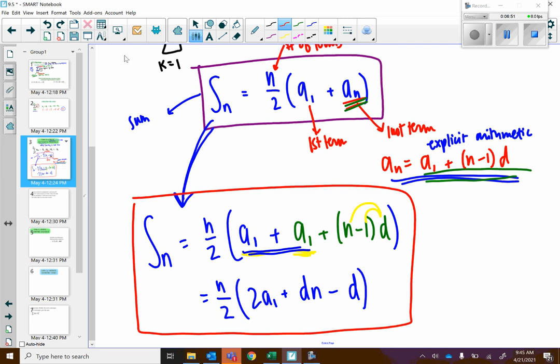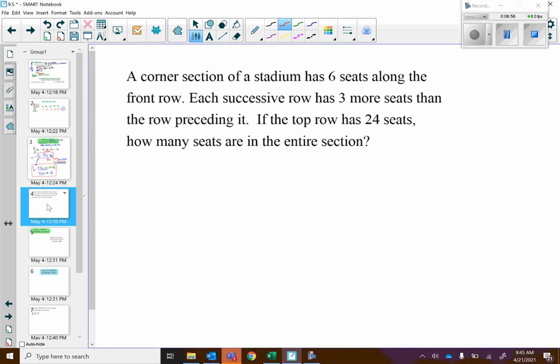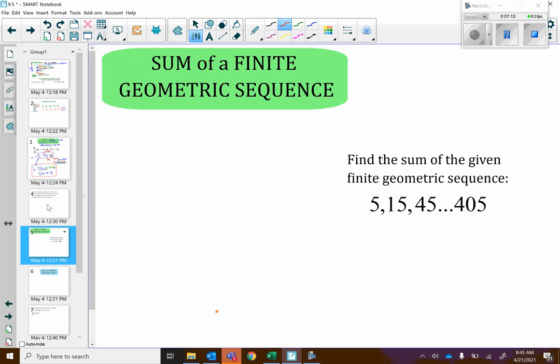The next problem I'm going to put on the screen for a moment. And if you would like to write this down, this will be one we do in class together. A corner section of a stadium has six seats along the front row. Each successive row has three more seats than the row preceding it. If the top row has 24 seats, how many seats are in the entire stadium? So pause the video, write that down if you're interested. Otherwise, we have two more formulas.